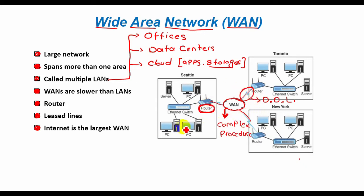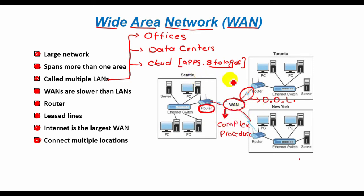Wide area networks are a form of telecommunication networks that can connect devices from multiple locations and across the globe. WANs are the largest and most expensive form of computer networks available to date. As you can see in this diagram, three different cities and locations are connected to each other via one network.